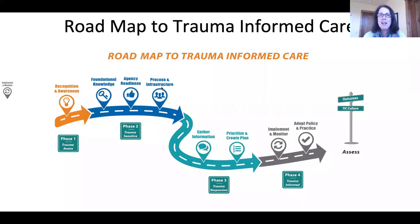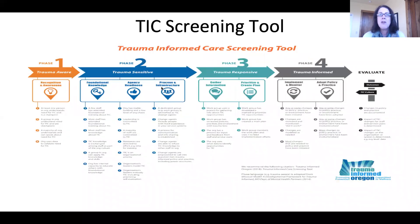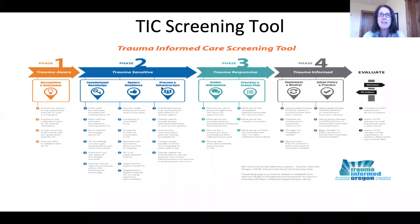The signpost at the end reflects the need for evaluation and assessment, which is also important. The roadmap to trauma-informed care was well received, but organizations were wanting to know what to do. The roadmap didn't give very much detail about what agency strategies need to happen in each phase or even within each step. So to address this, we created the TIC screening tool. The structure is the same as the roadmap — the colors are the same and the icons are the same — but we've added some details below each step to highlight the developmental accomplishments within that step.